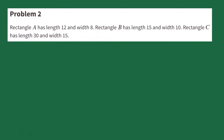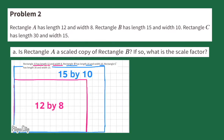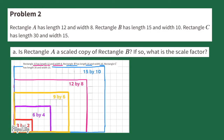Number 2. Rectangle A has Length 12 and Width 8. Rectangle B has Length 15 and Width 10. Rectangle C has Length 30 and Width 15. Part A: Is Rectangle A a scaled copy of Rectangle B? I've illustrated both rectangles. Rectangle A looks like it could be a scaled copy of Rectangle B. If you were to draw a line through the corners like before, you would see that yes, Rectangle A is a scaled copy of Rectangle B, because that line would run perfectly through the corners of both rectangles.